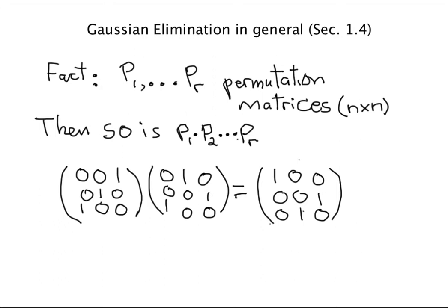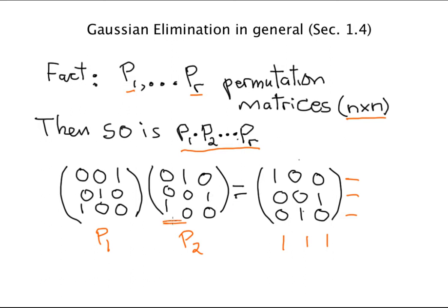Here's a very basic fact about permutation matrices. If you have a collection of n-by-n permutation matrices P1 through Pr and multiply them all together, the result is also a permutation matrix. For example, multiplying two permutation matrices together gives another matrix with exactly one 1 in each row and column. Why? If you think about applying these on the left to some matrix, the first permutes the rows in some order, then the second permutes the rows in another order. Doing one and then the other permutes the rows in some third order, which is exactly the resulting permutation matrix.